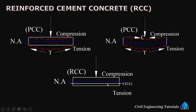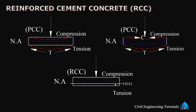So what we do is place a steel rod in the tension zone of a plain cement concrete beam. After giving reinforcement or a steel rod in the tension zone, the tensile load which the concrete was not able to take is taken care of by the steel reinforced in the plain cement concrete.